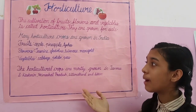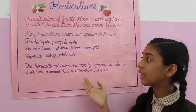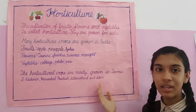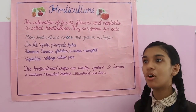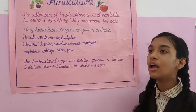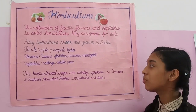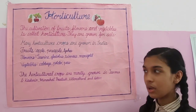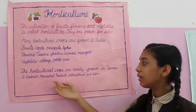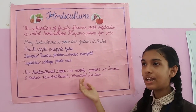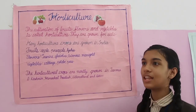Examples of horticulture crops include mango, apple, pineapple, litchi, cabbage, potato, peas, etc. These are some horticulture crops grown in India. Horticulture crops are mostly grown in states like Himachal Pradesh, Uttarakhand, and Sikkim.